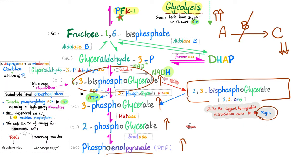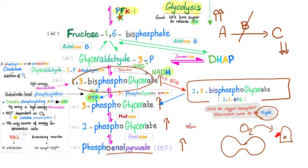2,3-BPG is the famous molecule that shifts the oxygen-hemoglobin dissociation curve to the right — meaning the hemoglobin on the red blood cell will give oxygen to the tissue, which ameliorates the symptoms of anemia. That's why patients with pyruvate kinase deficiency usually have mild symptoms. Conversely, patients with the less common pyruvate dehydrogenase deficiency have more severe, if not fatal, symptoms.